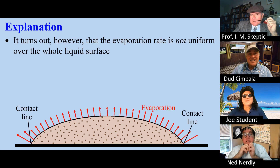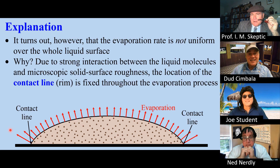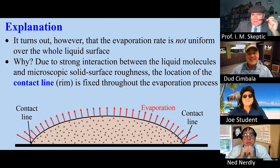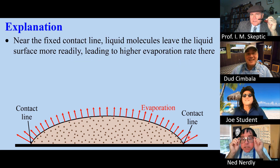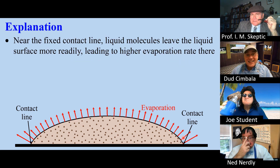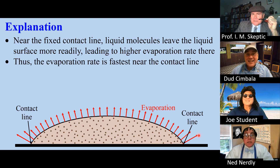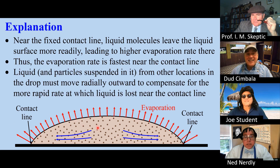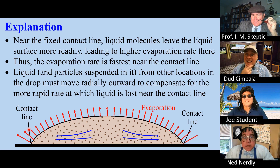It turns out that the evaporation rate is not uniform. Due to strong interaction between the liquid and microscopic surface roughness, the contact line, or the rim, remains fixed throughout the evaporation process. Near this fixed contact line, liquid molecules can leave more readily, leading to a higher evaporation rate. Therefore, liquid and the particles in it must move radially outward to make up for the liquid lost by evaporation at the contact line.